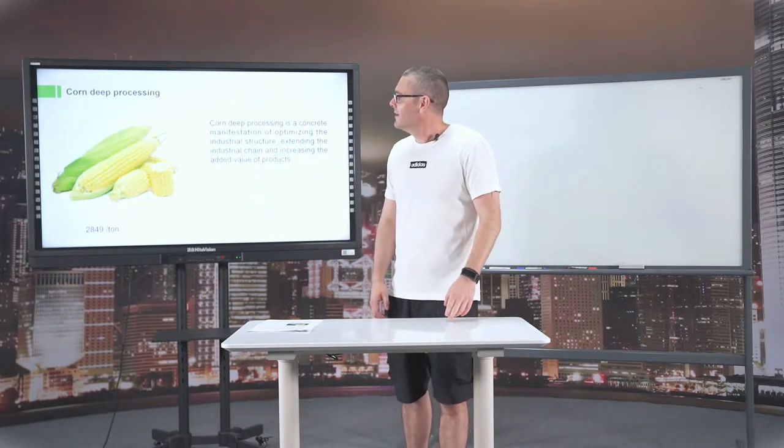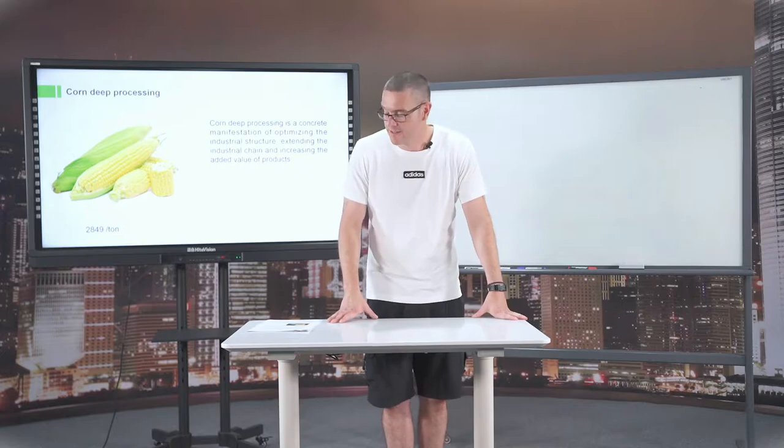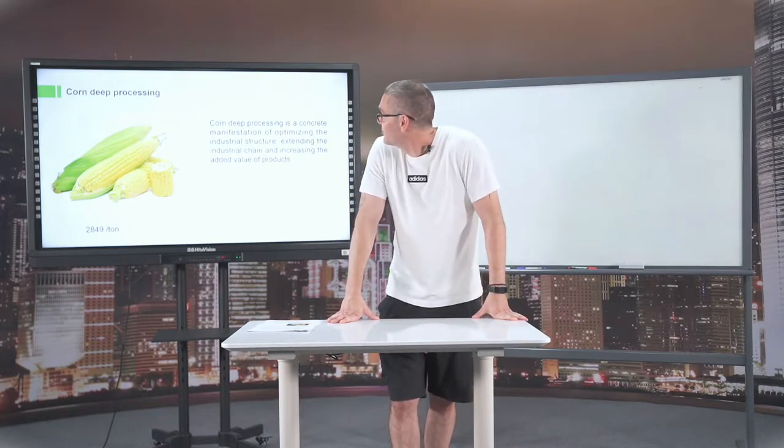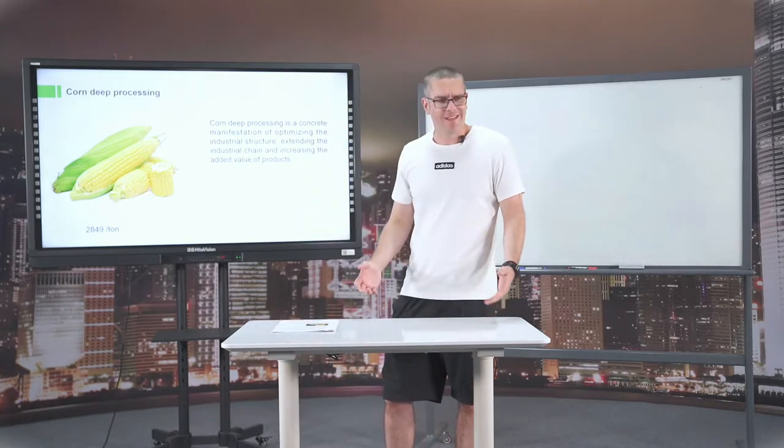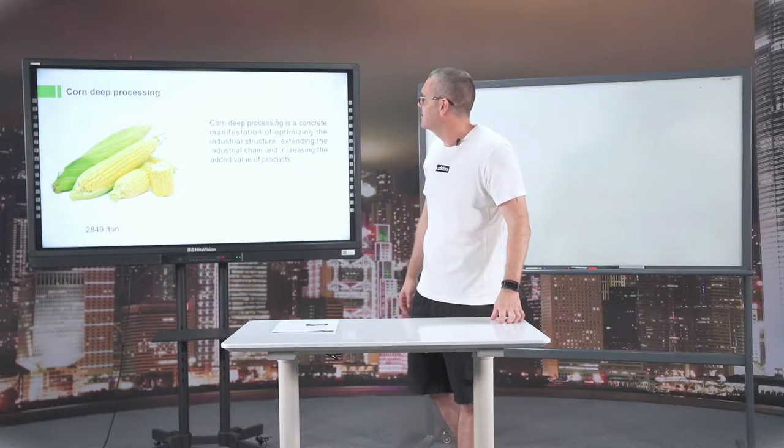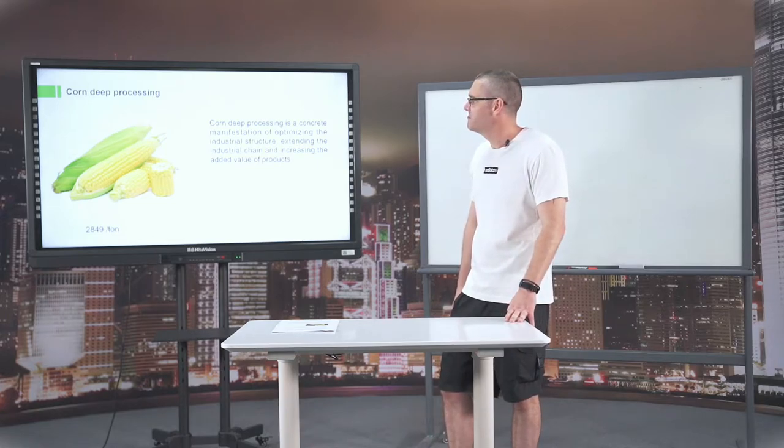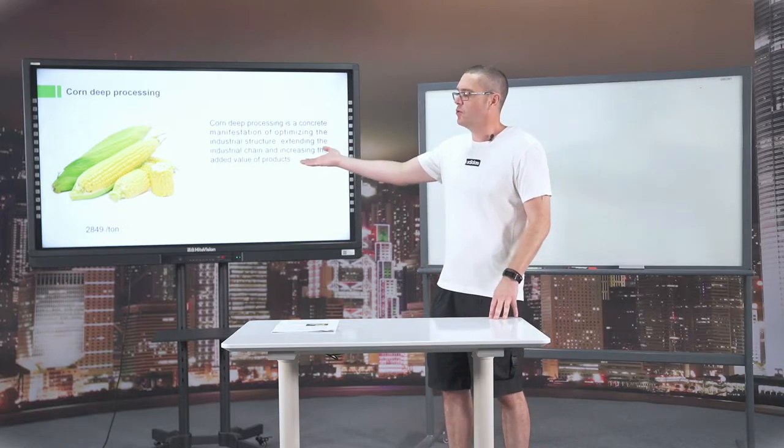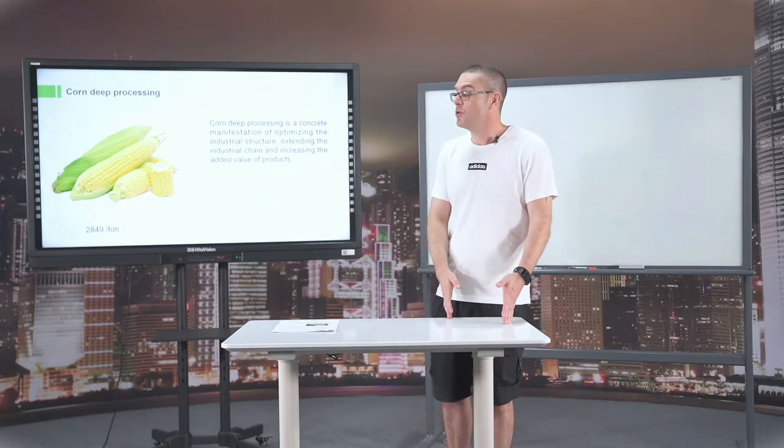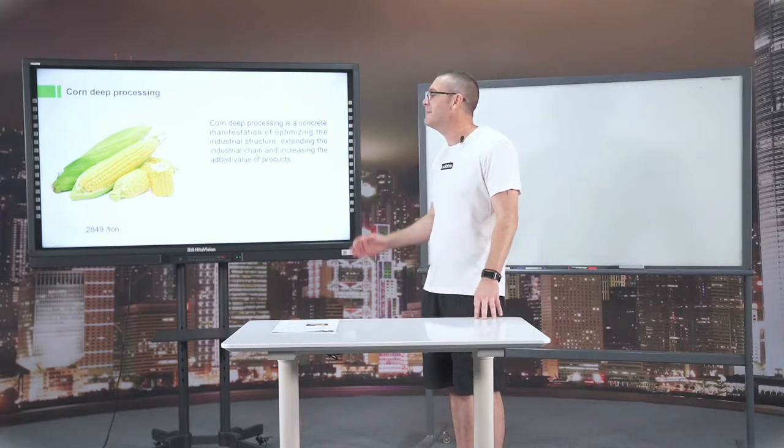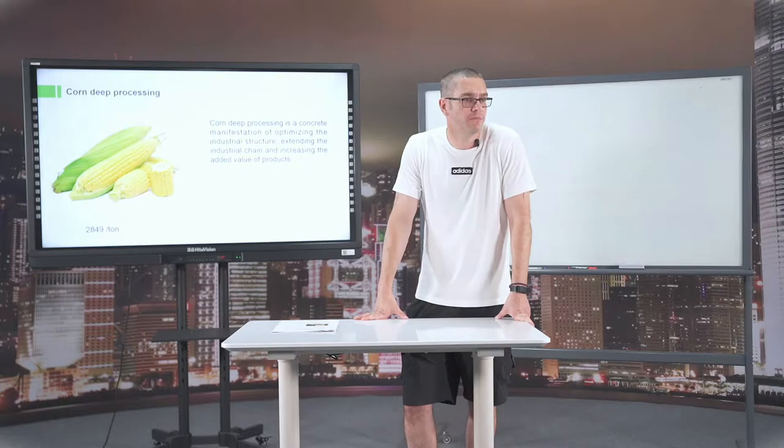Corn deep processing is a concrete business with huge infrastructure that expands along many industrial chains. There's a big industry and it stretches along increasing and adding value of products. A corn can be turned into many other things. Does anybody know what else? Oil.